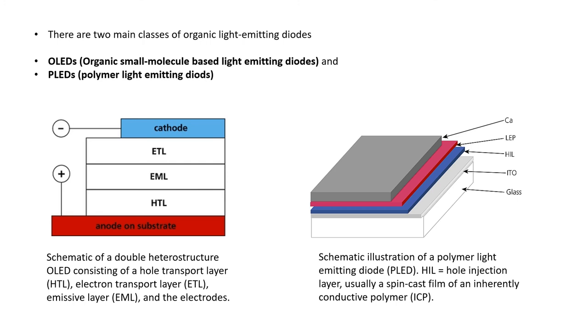PLED have relatively simple architecture with the light emitting polymer or LEP layer combining host, emitter, and charge transport functions in a single solution process layer of the device. Here is shown schematic of a double heterostructure OLED consisting of a hole transport layer HTL, electron transport layer ETL, emissive layer EML, and electrodes. The other picture is the schematic illustration of a polymer light emitting diode PLED. The HIL is hole injection layer, usually a spin cast film of an inherently conductive polymer.